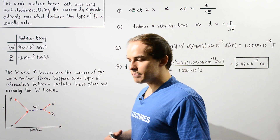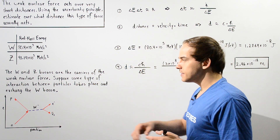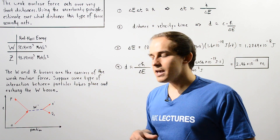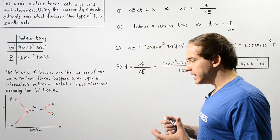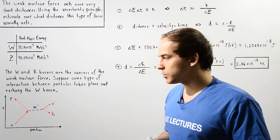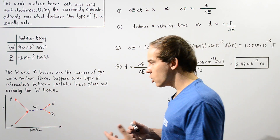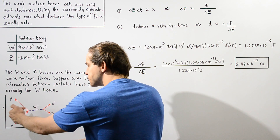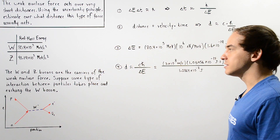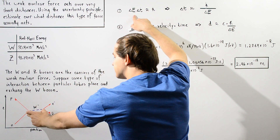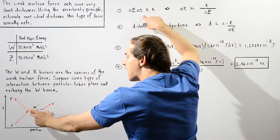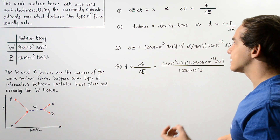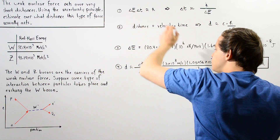To estimate this distance, we assume the velocity of the W gauge boson is the speed of light in a vacuum — 3 × 10⁸ meters per second. Applying Heisenberg's uncertainty principle: a certain amount of energy ΔE is not conserved over the time interval ΔT it takes the gauge boson to travel. So ΔE · ΔT ≈ ℏ (the reduced Planck's constant). Rearranging, ΔT = ℏ / ΔE.